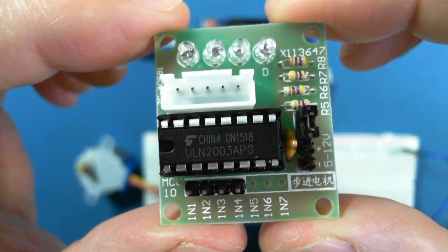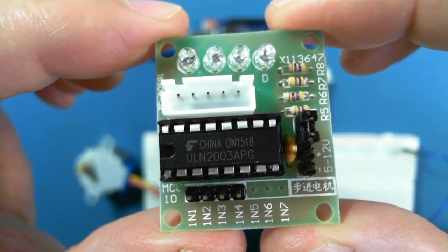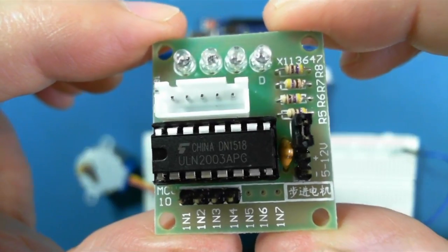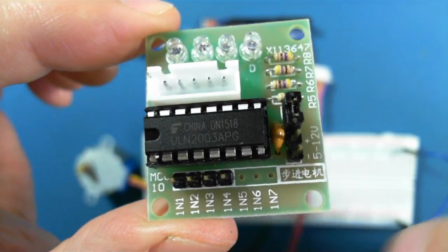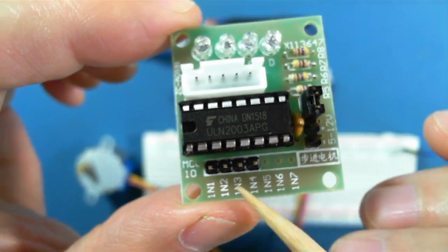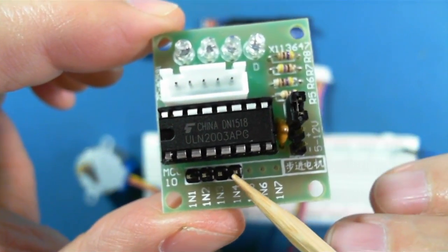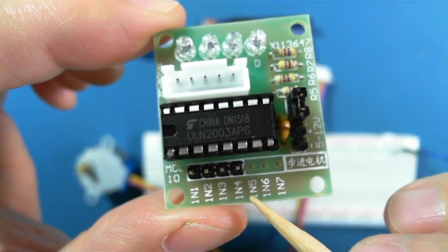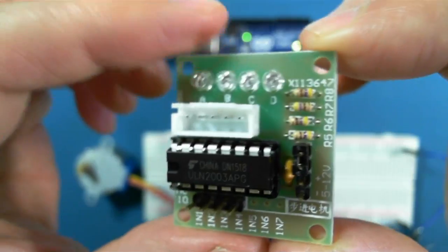It uses a chip called the ULN2003 and it has four inputs. These are inputs that connect to the digital pins on the Arduino. And then there are two here.